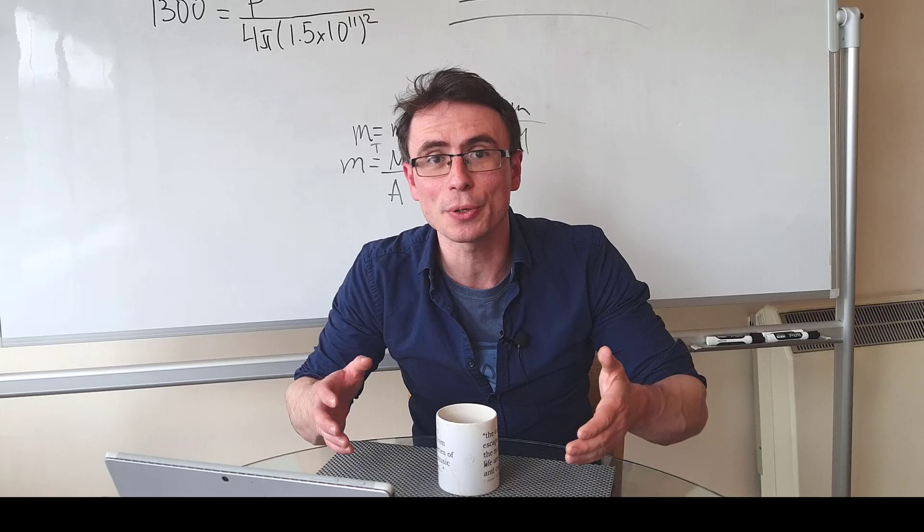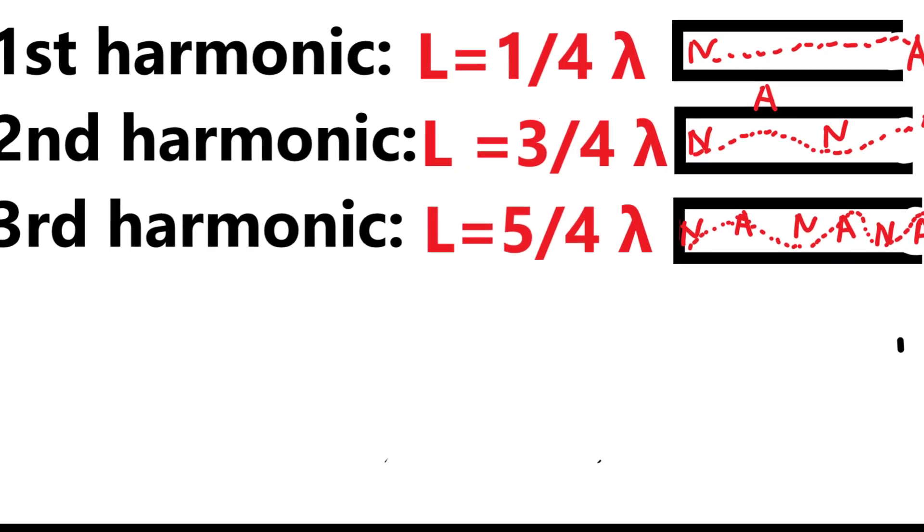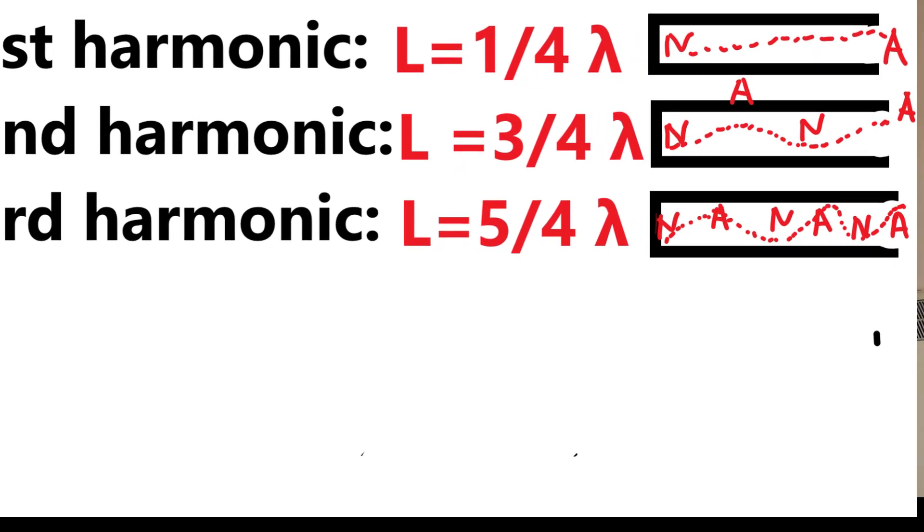In problems involving stationary waves and pipes, remember that if the pipe is open on one end, we need to have an antinode on that end and a node on the closed end. If the pipe is open on both ends, we need an antinode on both ends.